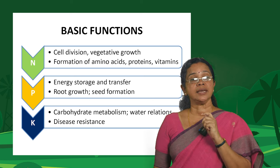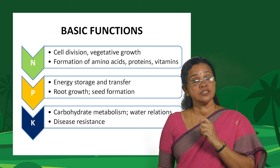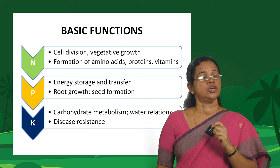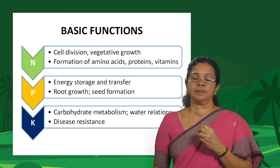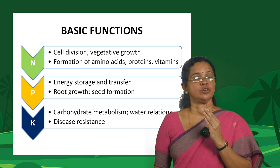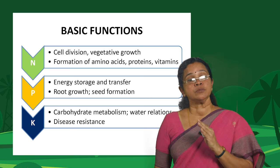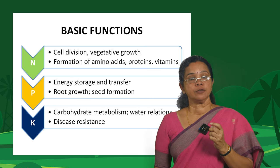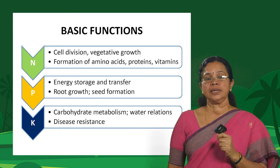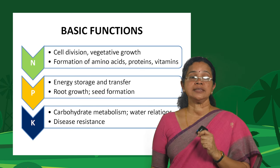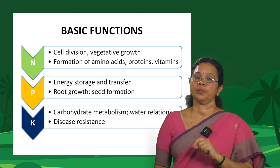Phosphorus is involved in energy storage and transfer reactions occurring inside the plant. You must have heard about ATP — the energy currency in plants — where phosphorus has a very crucial role. The primary function of phosphorus is in root growth and seed formation. Since phosphorus has a role in root growth, phosphatic fertilizers should always be applied at the time of sowing or planting.